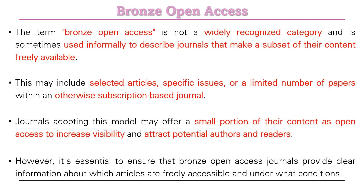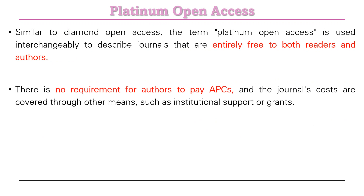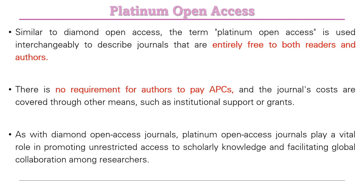Platinum open access is very similar to diamond open access. The term is used interchangeably to describe journals that are entirely free for both readers and authors, with no APC requirement. The journal's costs are covered through other means such as institutional support or grants. Like diamond open access journals, platinum open access journals play a vital role in promoting unrestricted access to scholarly knowledge and facilitating global collaboration among researchers.